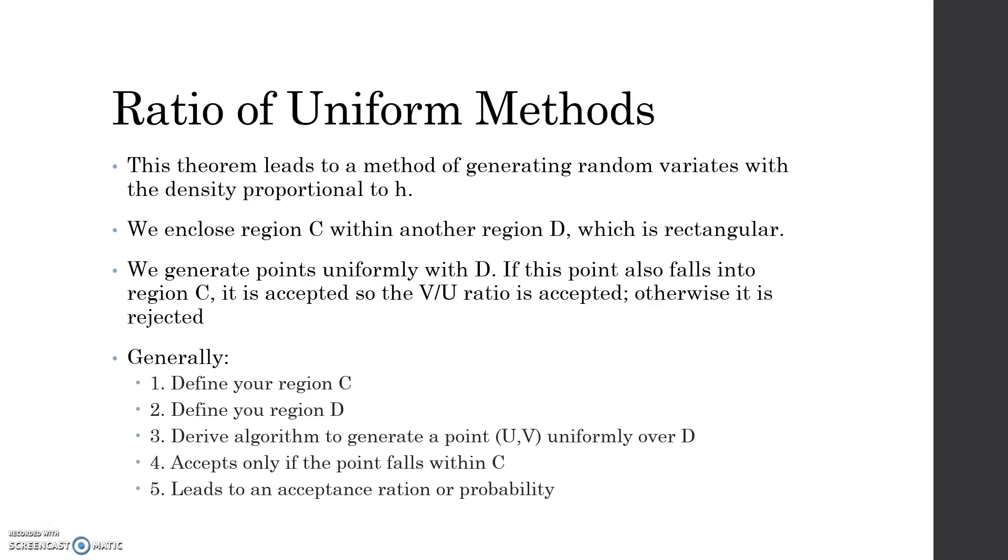In general, recapping the steps, you define your region c, and then you define your region d. Then you derive your algorithm to generate a point uv uniformly over region d. If the point that you've randomly generated uniformly over d also falls within region c, you accept that ratio, which leads to an acceptance ratio or the probability of acceptance. That's our third and final method of generating random variance.